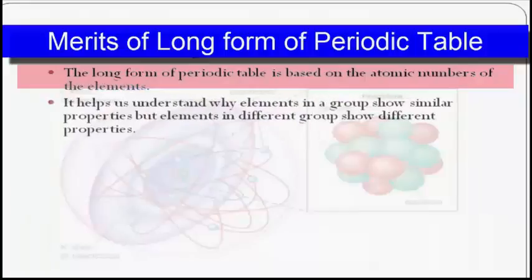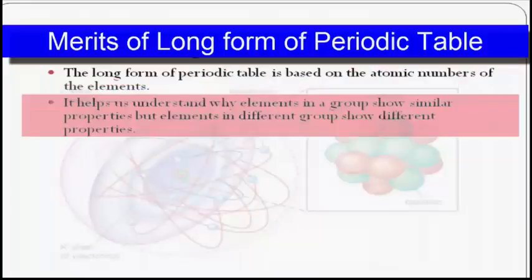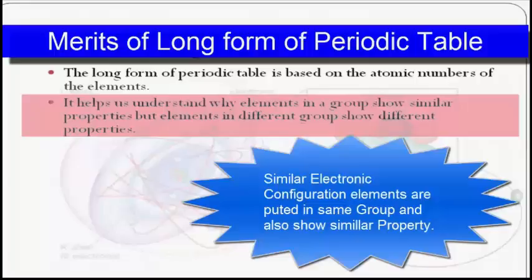The second merit is that it helps us understand why elements in the same group show similar properties but elements in different groups show different properties. In the long form, elements are arranged in groups according to their electronic configuration. Elements with similar electronic configuration are placed in the same group and show similar properties, while elements with different configurations are placed in different groups and show different properties. The short form of the periodic table does not give any reasons for these similarities and dissimilarities.